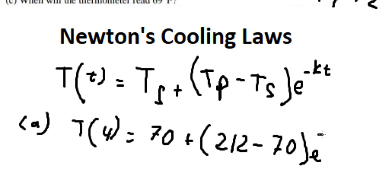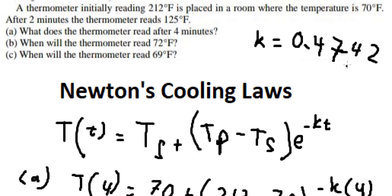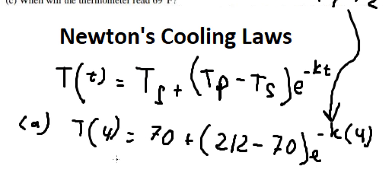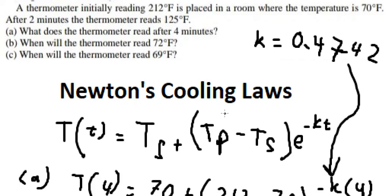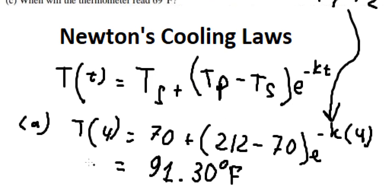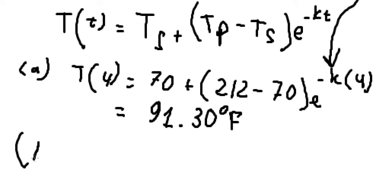E to the power of negative K, T we have number 4. And now we put value of K here. And we will have T of 4, that is about 91.30 degrees Fahrenheit. And this is the final answer we need to find for question A.